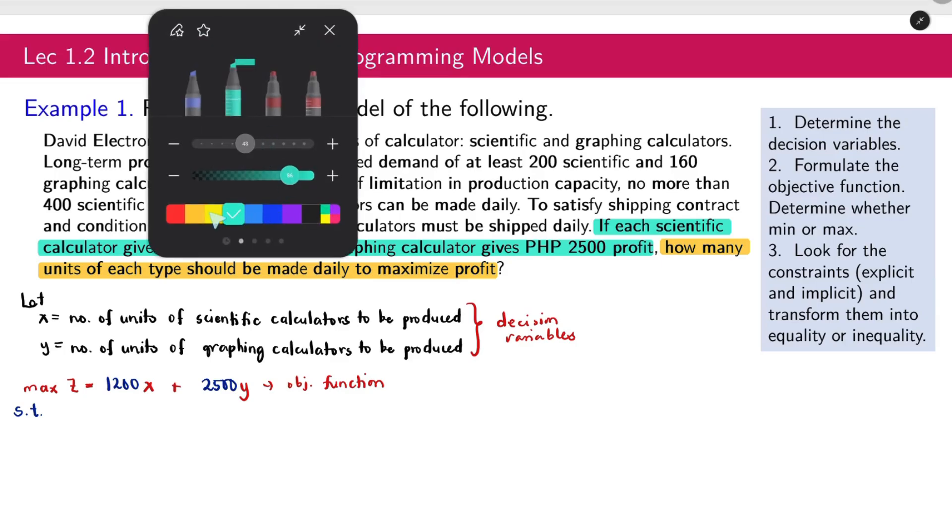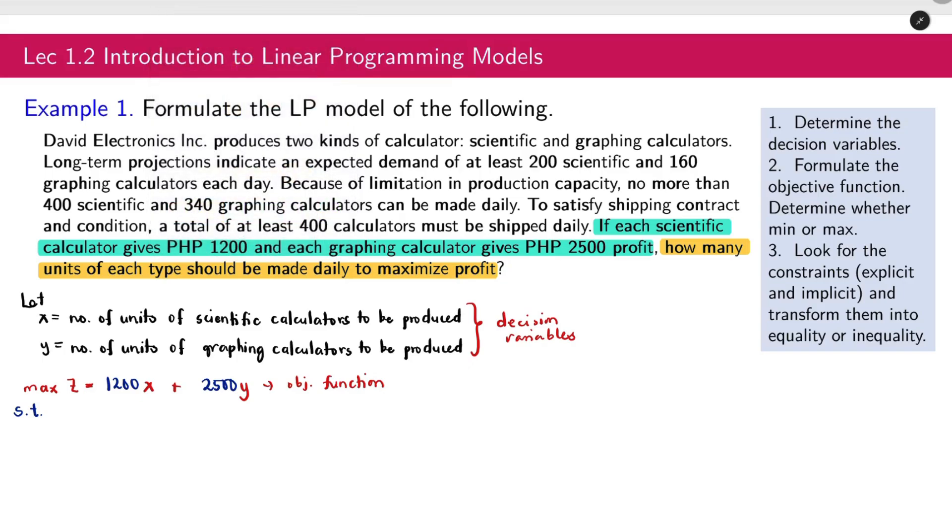Let's put a highlight on the possible constraints. Long-term projections indicate expected demand of at least. So we have a demand constraint. How will we write this? There is demand of at least 200 scientific and 160 calculators each day. For the demand of scientific, we'll separate them. We won't add them. So we have x is greater than or equal to 200. Take note we have at least. So that is this one.